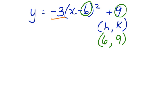Now, the leading coefficient is negative. It's a negative 3. When a leading coefficient is negative, the parabola is going to open downward.